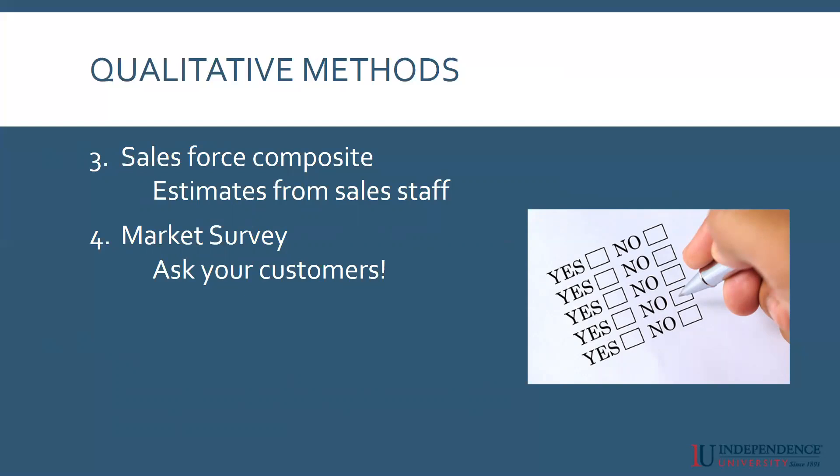The fourth way of qualitative forecasting is simply to ask your customers — what do they think is going to happen and how much do they think they're going to order? This works especially well if you have long relationships with customers. If you are a supplier to different organizations, you can talk to them and get some idea about where they see the future, and then you create your own forecast.